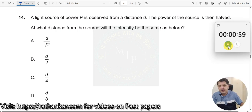Question number 14. A light source of power P is observed from a distance d. The power of the source is then halved.